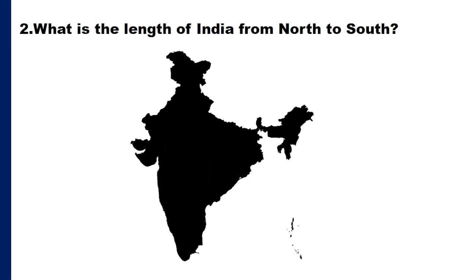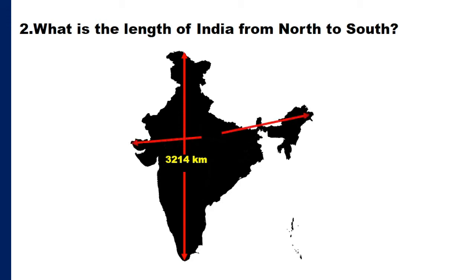You can see here our India. Question number 2: what is the length of India from north to south? The length of India from north to south is 3,214 kilometers. Before starting our next topic, you must know the answers to all of these questions. What is the length of India from east to west? The length of India from east to west is 2,933 kilometers.